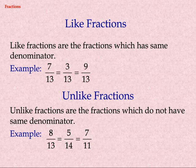Like Fractions are fractions which have the same denominator. Example: seven by thirteen, three by thirteen, nine by thirteen. Unlike Fractions are fractions which do not have the same denominator. Example: eight by thirteen, five by fourteen, seven by eleven.